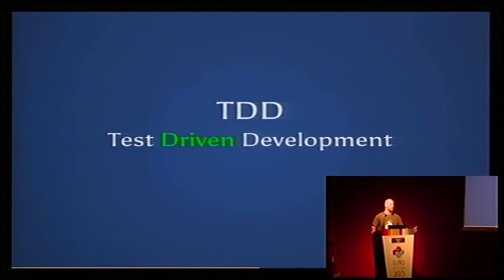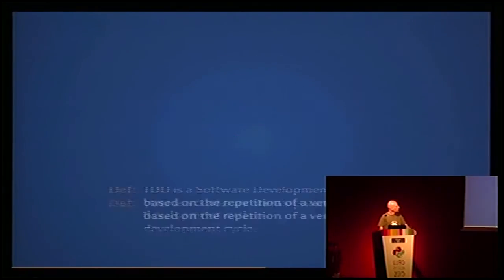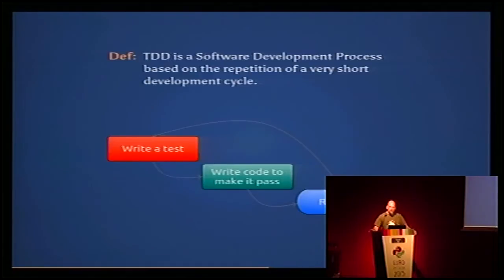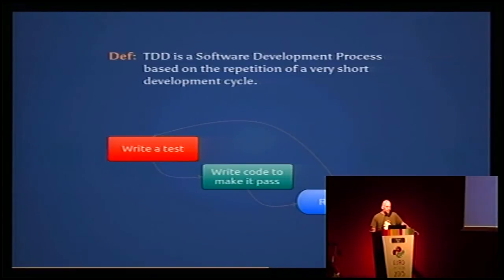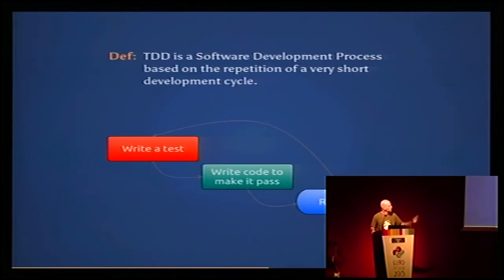What is test-driven development? That's the important bit, because that's what actually changes when you do it. It's a software development process based on a very short cycle that you repeat very often. You start by writing a test, then you make it run, and it fails — this is called the red phase. Then you write the minimum amount of code to make the test pass, and the test passes — this is called the green phase.